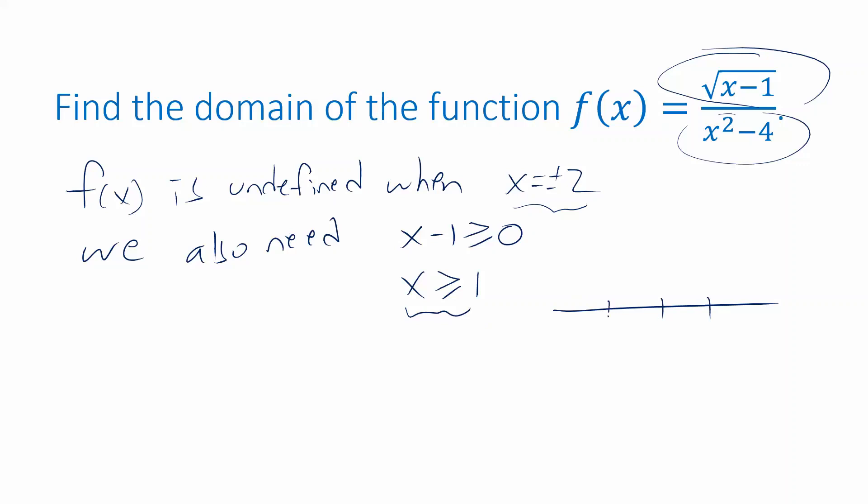0, 1, negative 1, negative 2, positive 2. I was excluding 2 and negative 2. I only want things that are bigger than or equal to 1. So I want this point and everything to the right of it, but I can't have this point where x is 2. And I can't have anything to the left of 1. So what's that leaving me? Everything from 1 to 2 and everything from 2 to infinity.